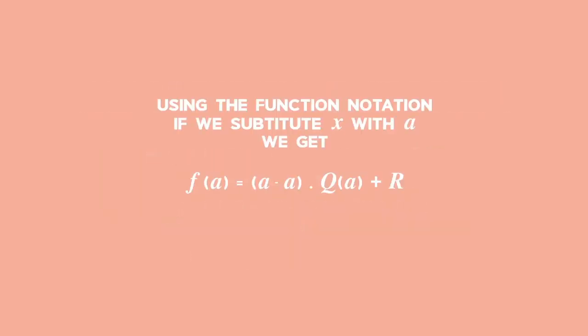Using function notation, if we substitute x with a, we get f of a equals open bracket a minus a close bracket times q of a plus r. Since a minus a equals 0, therefore f of a is equal to r.